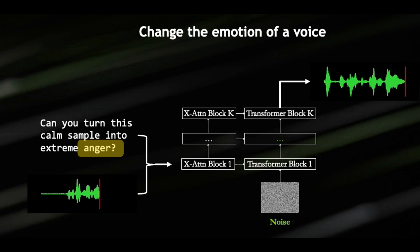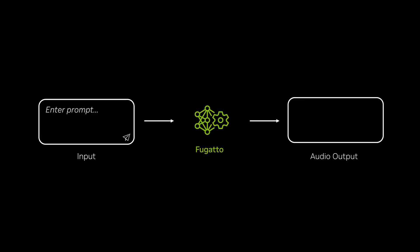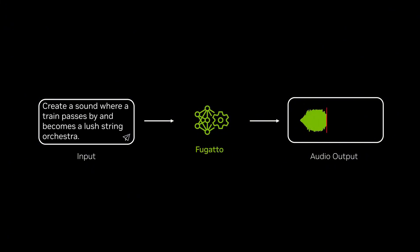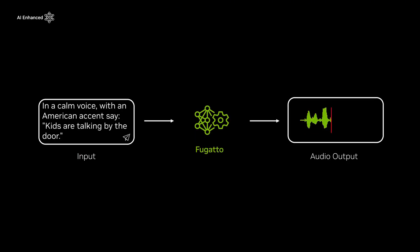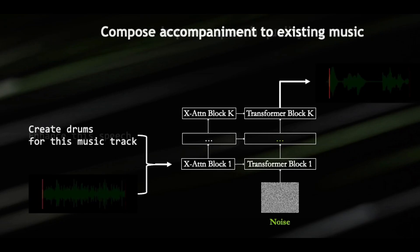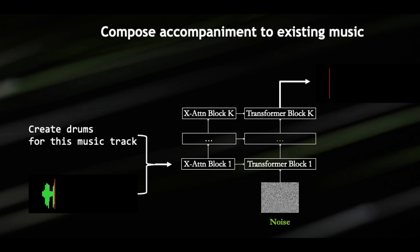But that's not all. Fugato can also generate speech audio entirely on its own based on a text input. You can tell it what kind of accent and tone you need, and it will generate it for you. And even then, if something in the audio is not to your liking, you can do a follow-up and ask it to make updates.